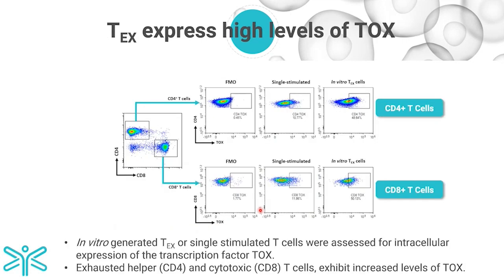Beyond surface markers, we characterized expression of transcription factors linked with exhaustion, focusing on TOX. We stimulated cells over four rounds and rested them for 72 hours, then assessed expression in CD4 and CD8 T-cells compared to single-stimulated T-cells. In single-stimulated T-cells, there was some upregulation of TOX, but in exhausted T-cells, TOX expression was much higher in both CD4 and CD8 T-cell populations — reconfirming that these cells express most hallmarks of in vivo observed exhausted T-cells.